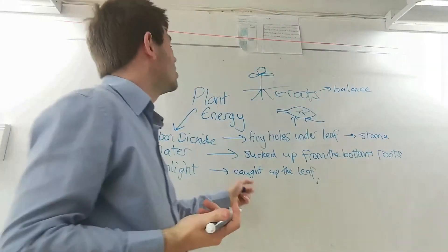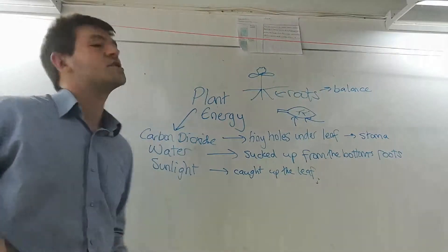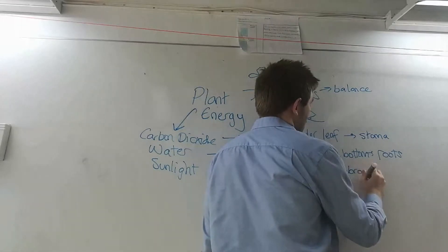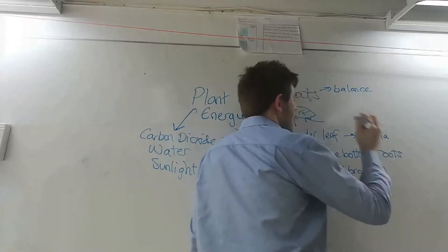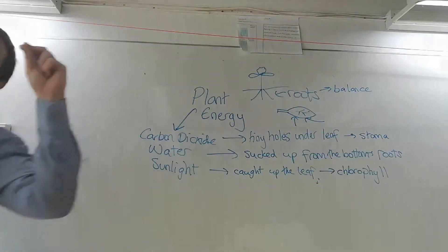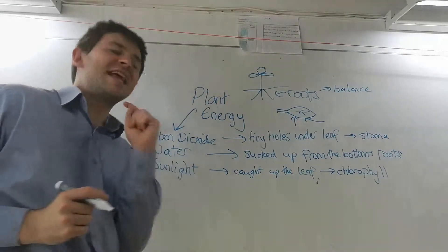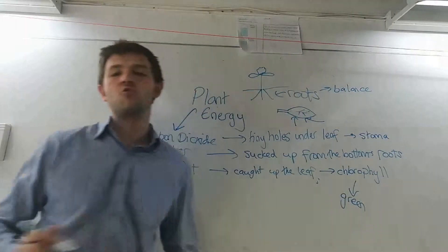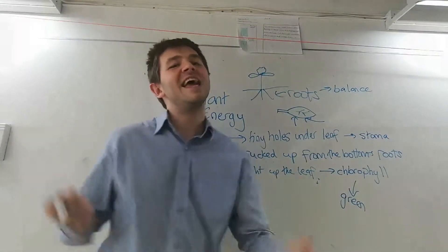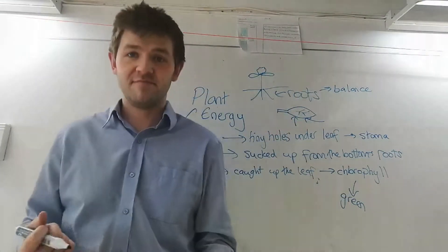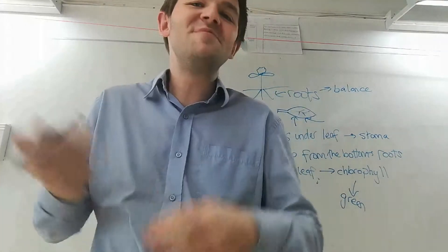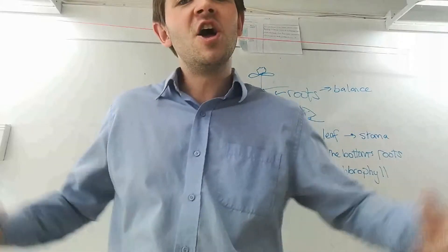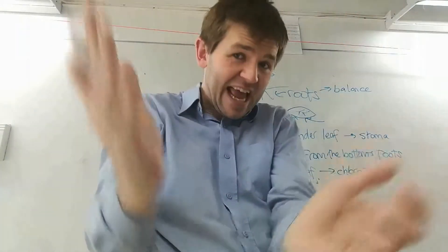So we need the sunlight to catch, and there's a chemical called chlorophyll which does that job. That chemical can catch sunlight. This is why plant leaves are green, because chlorophyll is a green material. As the leaves start to die in autumn, the leaves can change to a red or a brown color because the chlorophyll is being taken away.